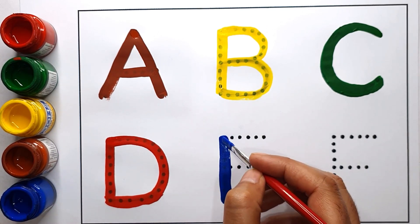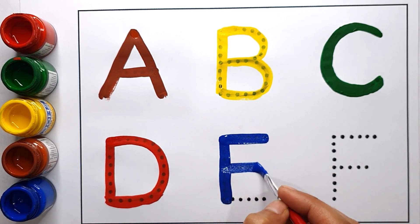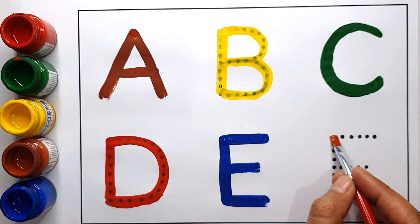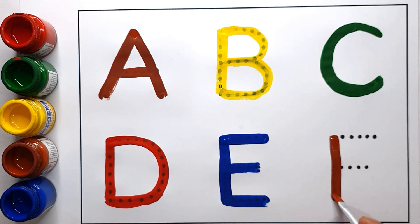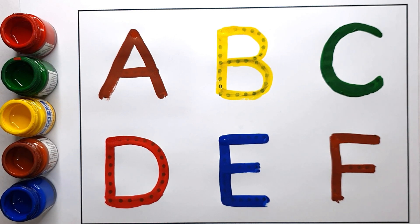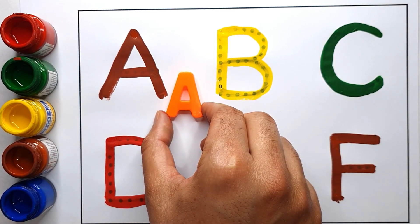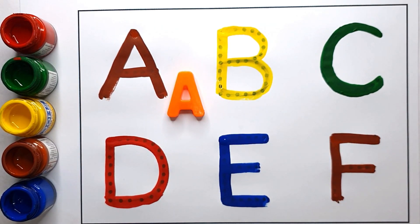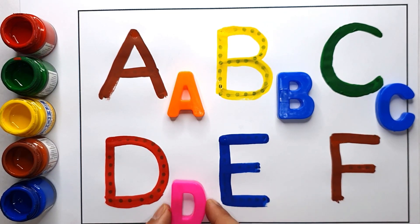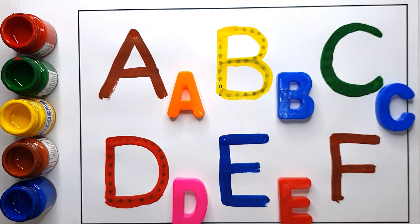...for elephant. Brown color. F, F for fish. Review: E for elephant, B for banana, C for cat, D for dog, F for fish.